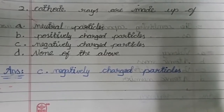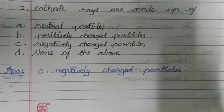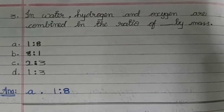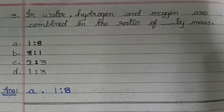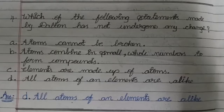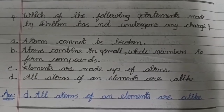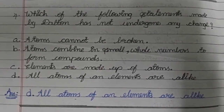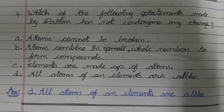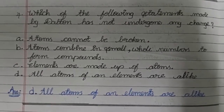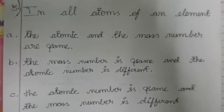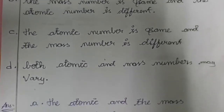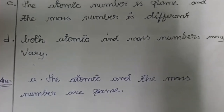Negatively Charged Particles. Question No. 3 Answer A. One is Eight. Question No. 4 Answer D. All Atoms of an Element are Alike. Question No. 5 Answer A.